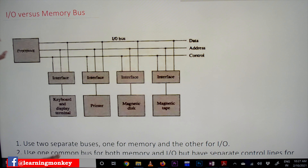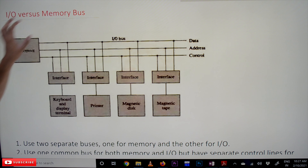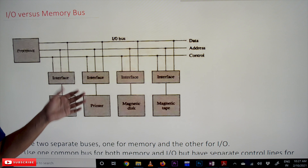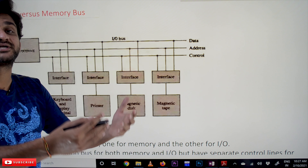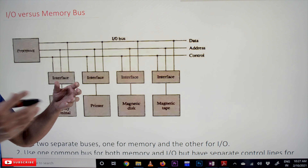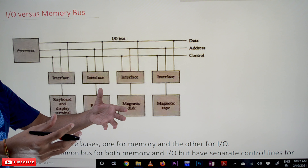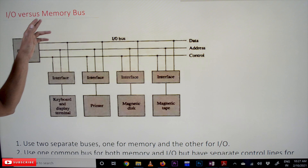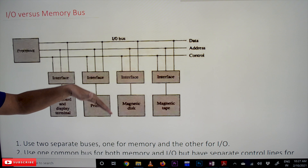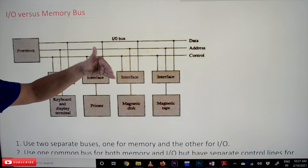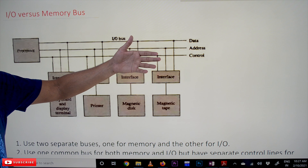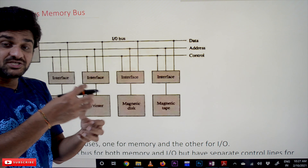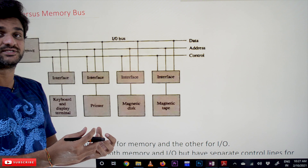So how can this memory bus and IO bus be organized? The concept we discussed earlier is just one way — there are different types in which the memory bus and IO bus can be connected. In this class we will try to understand the different types of IO bus and memory bus connections and how those connections are made.